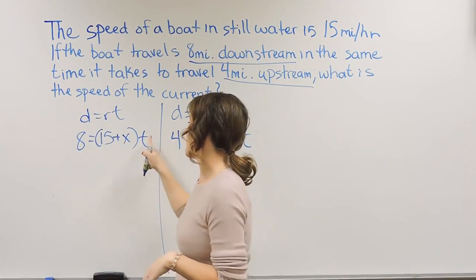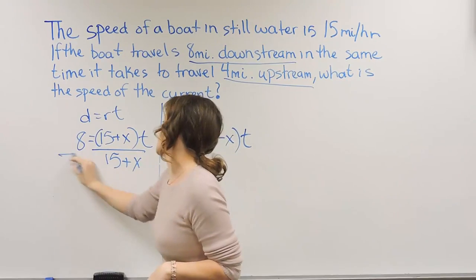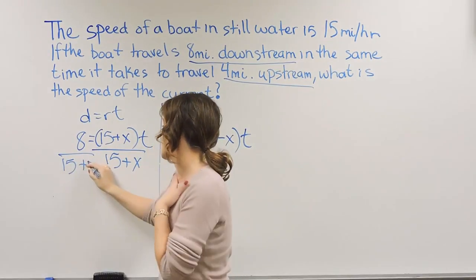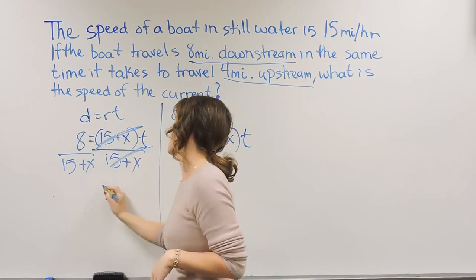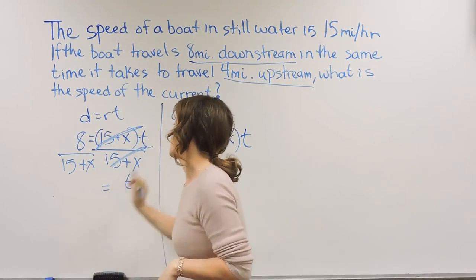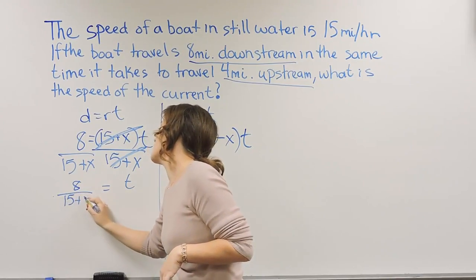So starting with the equation on the left, if I'm solving that for T, all I have to do is divide by the 15 plus X on both sides. So 15 plus X cancels with 15 plus X, and T is equal to 8 over 15 plus X.